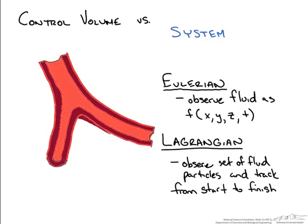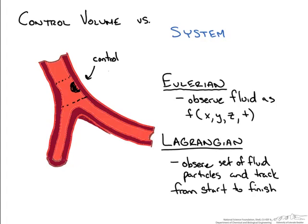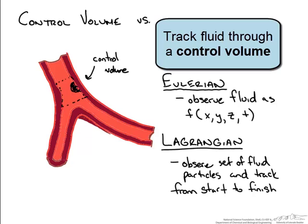But maybe we're interested in a particular part of an artery and what happens as fluid flows past it. We might want to look at just a certain area within that artery. In this approach, we are looking at a control volume. This allows us to specifically focus on the effects of fluid in that particular volume, which is typically what we're most interested in.